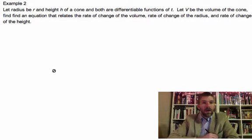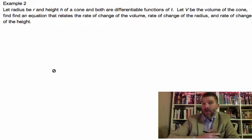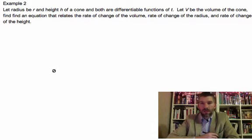Let the radius be r and height be h of a cone, both differentiable functions of t. Let V be the volume of the cone. Find an equation that relates the rate of change of the volume with the rate of change of the radius and the rate of change of the height.